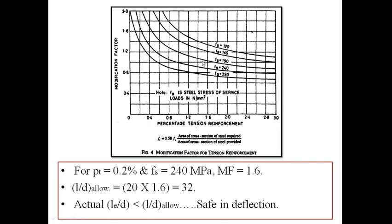If you look at the curves corresponding to FS, FS = 120 is the top curve, and as we go towards the bottom curves, FS is increasing. Interestingly, as FS increases — that means as the grade of steel increases — the modification factor goes on decreasing.